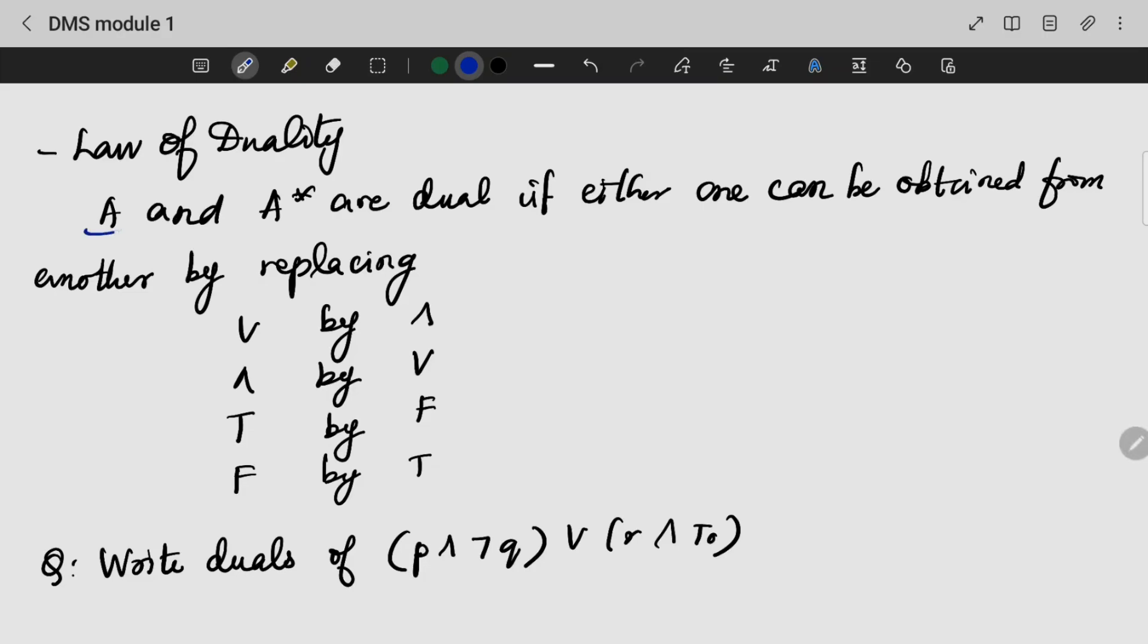A and A dash, they will be the duals of each other. If they can be obtained by replacing OR with AND, AND with OR, true with false and false with true, we can say that A is the dual of A dash.